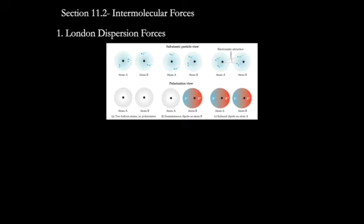If you look at the center diagrams, notice that the electrons happen to be lining up on the left hand side of atom B. Since they are lining up on the left hand side of atom B, the right hand side of atom B is going to be partially positively charged. Since it's partially positively charged, that's going to have an effect on atom A, as you can see in the C diagrams. The partial negative is going to repel the electrons in atom A, causing the left hand side of atom A also to be partially negatively charged. The right hand side of atom A will be partially positively charged. That separation of charges, even though it's very slight, is going to cause an attraction. That attraction is called London dispersion forces, and it exists in every single type of molecule and every single type of atom.